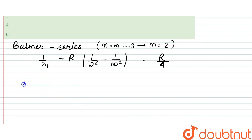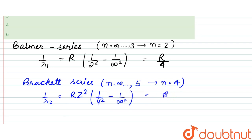Now, shortest wavelength in bracket series. Bracket series is for n equal to infinity till 5 to n equal to 4. So, 1 by lambda 2 is equal to R into Z squared into 1 by 4 squared minus 1 by infinity squared. So, this turns out to be equal to RZ squared by 16.